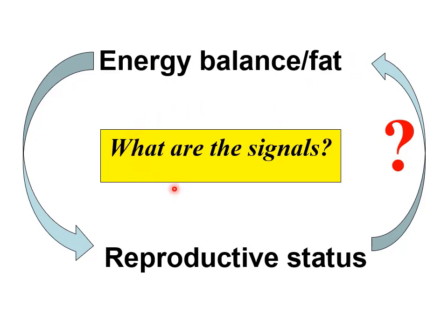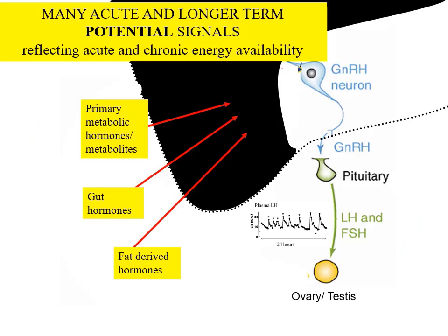So what are the signals involved? We know that sex steroids are part of this axis, but how does the body know how much energy it has, and how much fat? Many potential signals exist: primary metabolic hormones in the blood and the metabolites which control them — things like glucose — and hormones coming from the gut, and hormones coming from the fat.